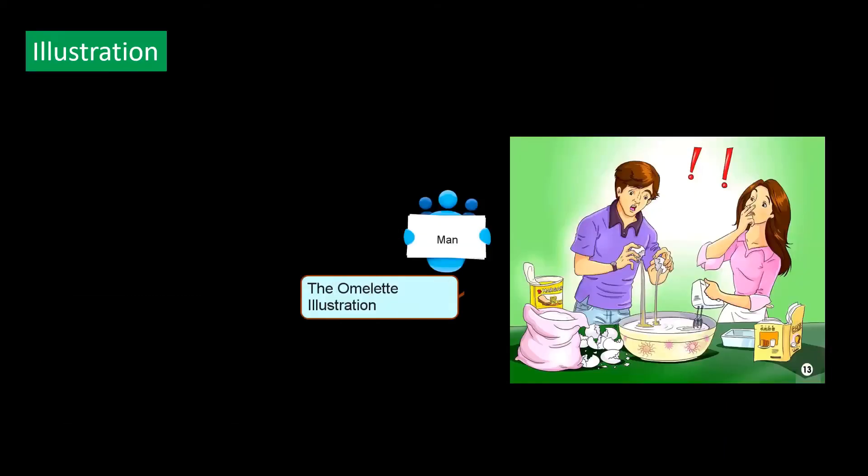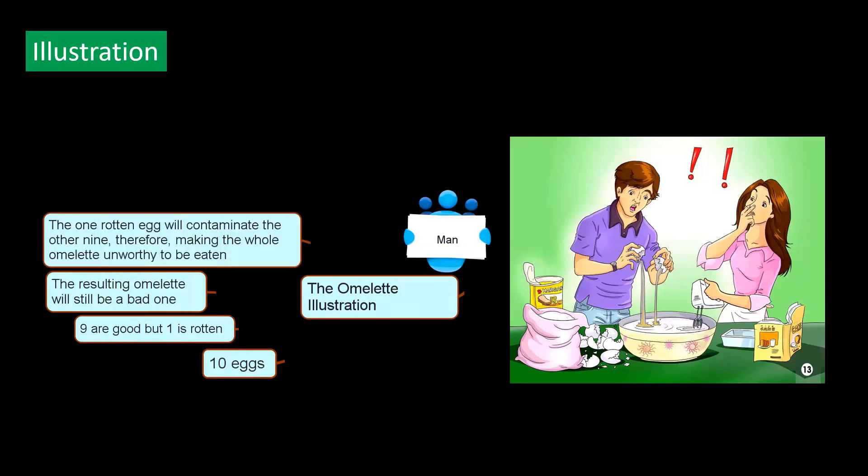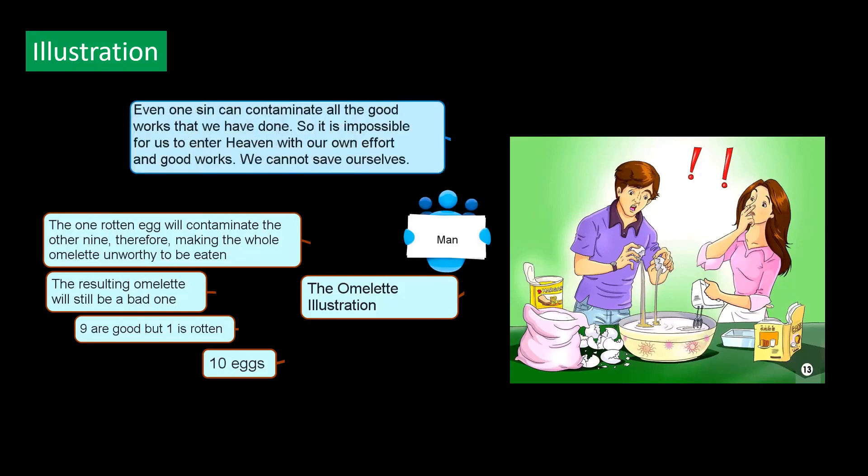Let me illustrate. Assuming you come to my house for breakfast and I prepare an omelet for you, and I have 10 eggs to make that omelet. I've already mixed nine eggs and they all are good. But the last one, when I break it open, it is rotten, but I mix it anyway. And because it's smelly, I put all kinds of spices to take the smell away. Do you think the resulting omelet will be a good one? Certainly not. It will be a bad one. The one rotten egg will contaminate the other nine, therefore making the whole omelet unworthy to be eaten.